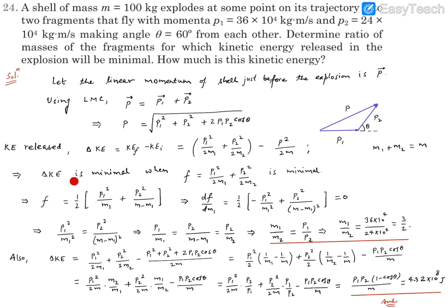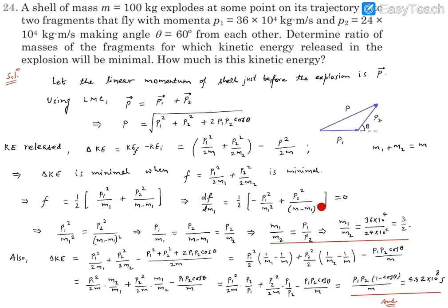We minimize F using the differentiation method: find dF/dM1 and set it to zero. Since M1 + M2 = M (constant), we substitute M2 = M - M1, leaving only one variable M1. Differentiating: the first term gives -P1²/(2M1²) and the second term gives +P2²/(2(M - M1)²). Setting dF/dM1 = 0 to find the minimum.